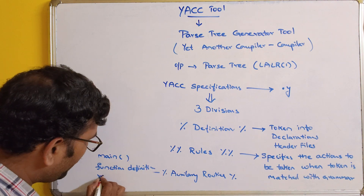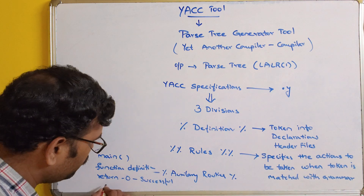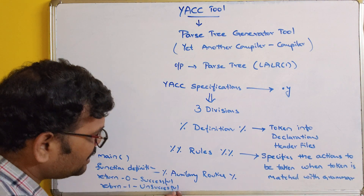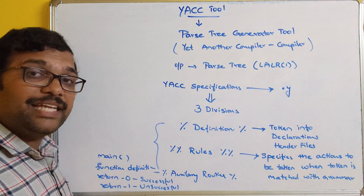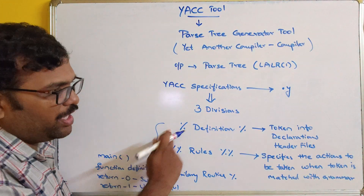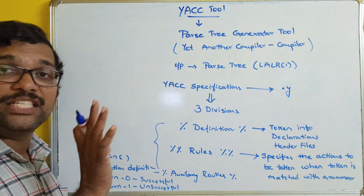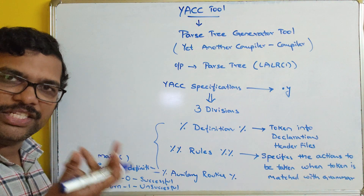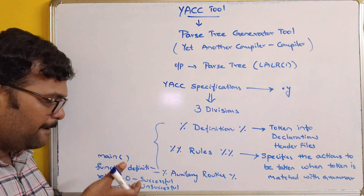To summarize: if return is zero, that is successful execution; if it returns one, it is unsuccessful. This information is specified in the Auxiliary Routines section. So these are the three sections in the YACC specifications: Definition (all declarations), Rules (actions to be taken on a match), and Auxiliary Routines (function definitions with return values).